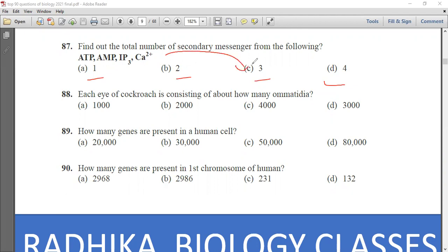Find out the total number of secondary messenger from the following. 1, 2, 3 or 4. There are 3 secondary messengers. Each ommatidium of compound eye consists of how many ommatidia? 1000, 2000, 4000 or 3000. It consists of 2000 ommatidia. How many genes are present in human cell? 20,000, 30,000, 50,000 or 80,000. This is very important - 30,000 genes are present in human cell.